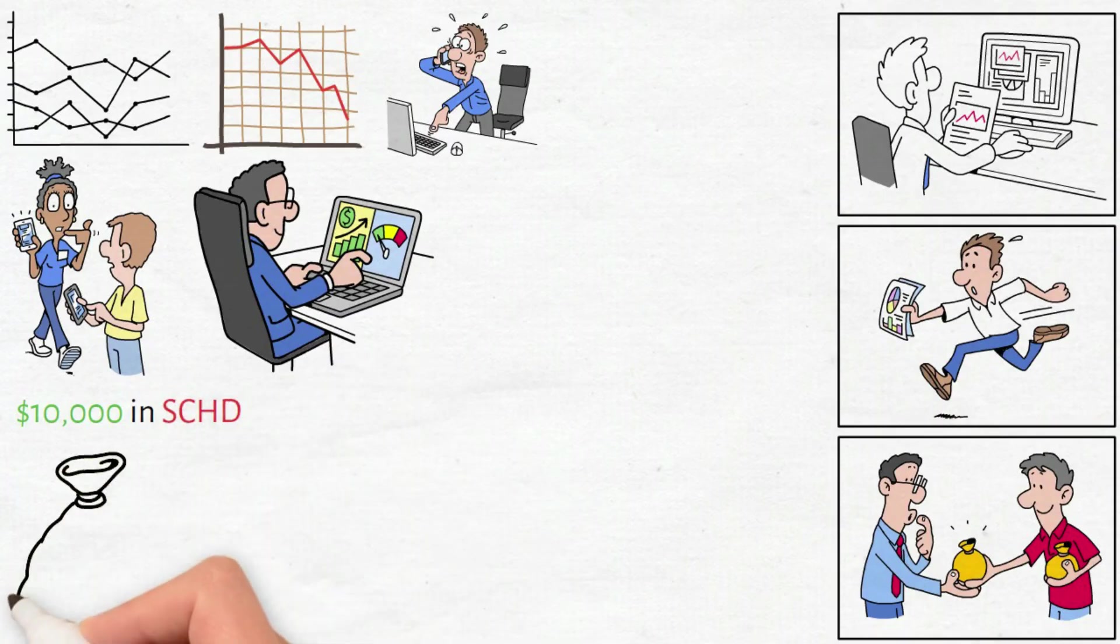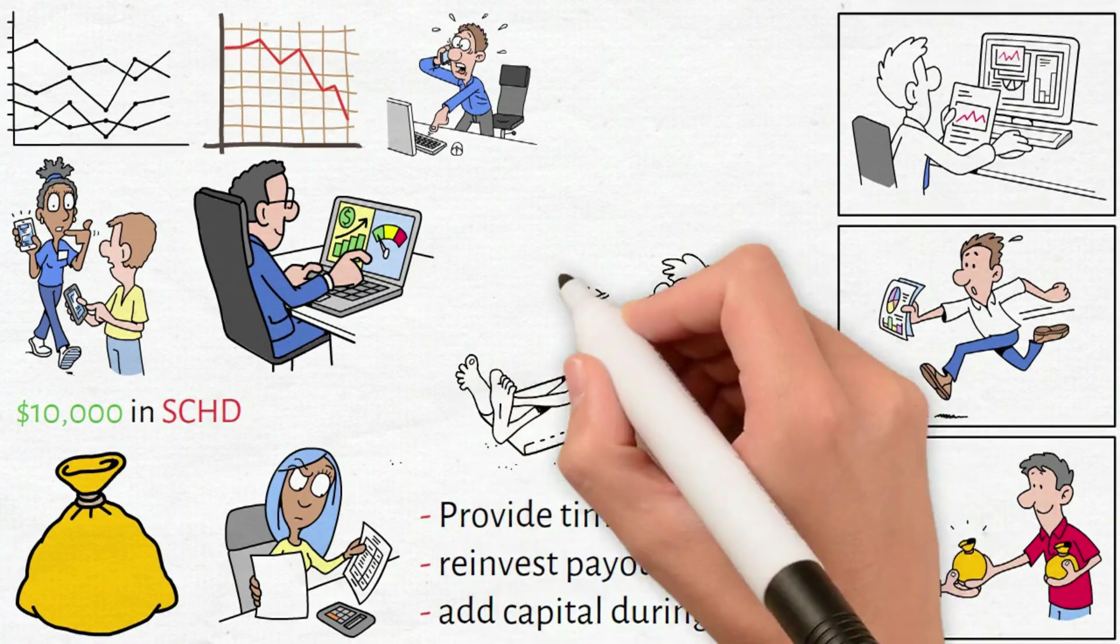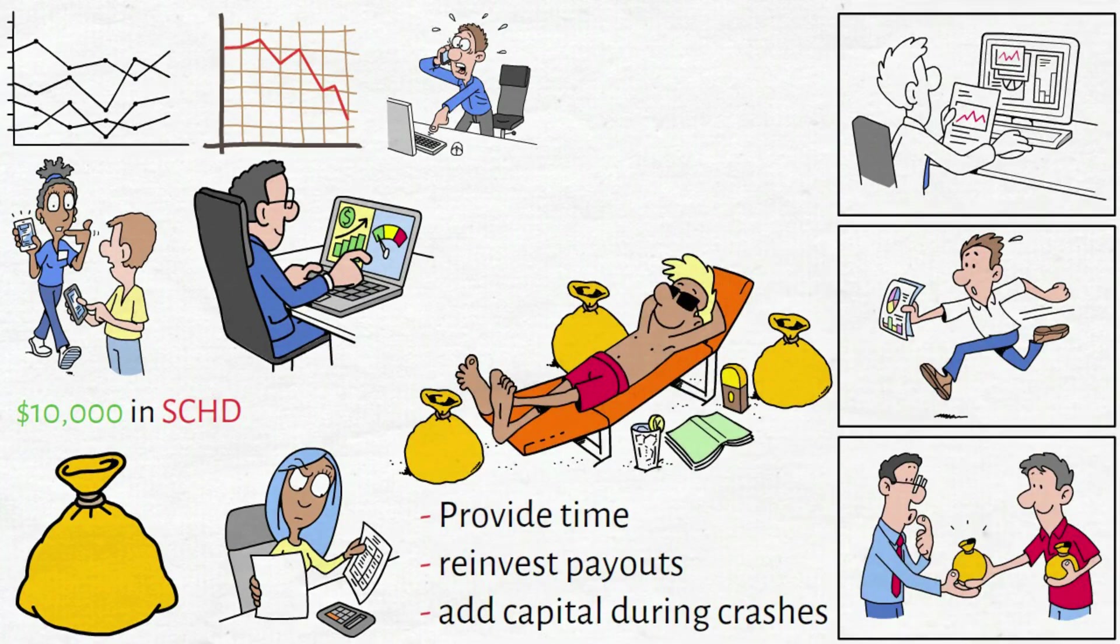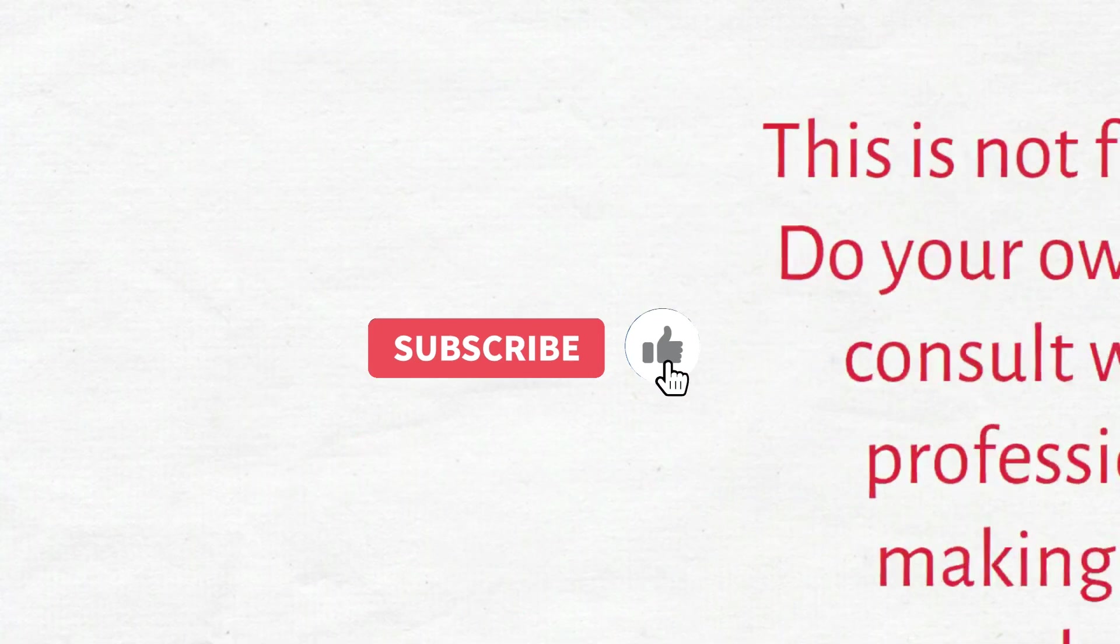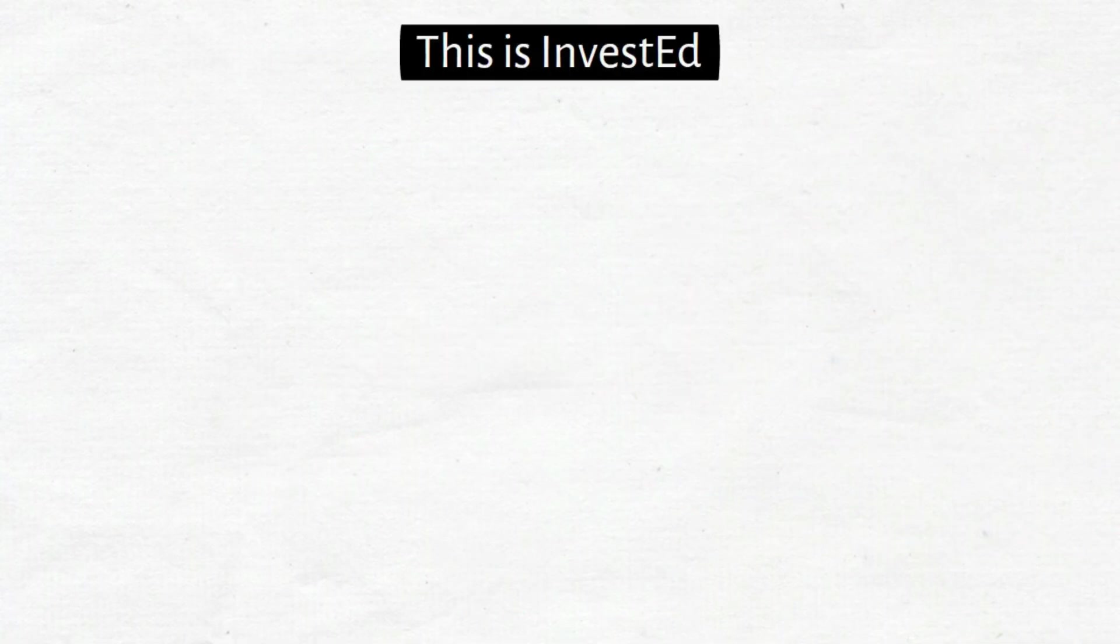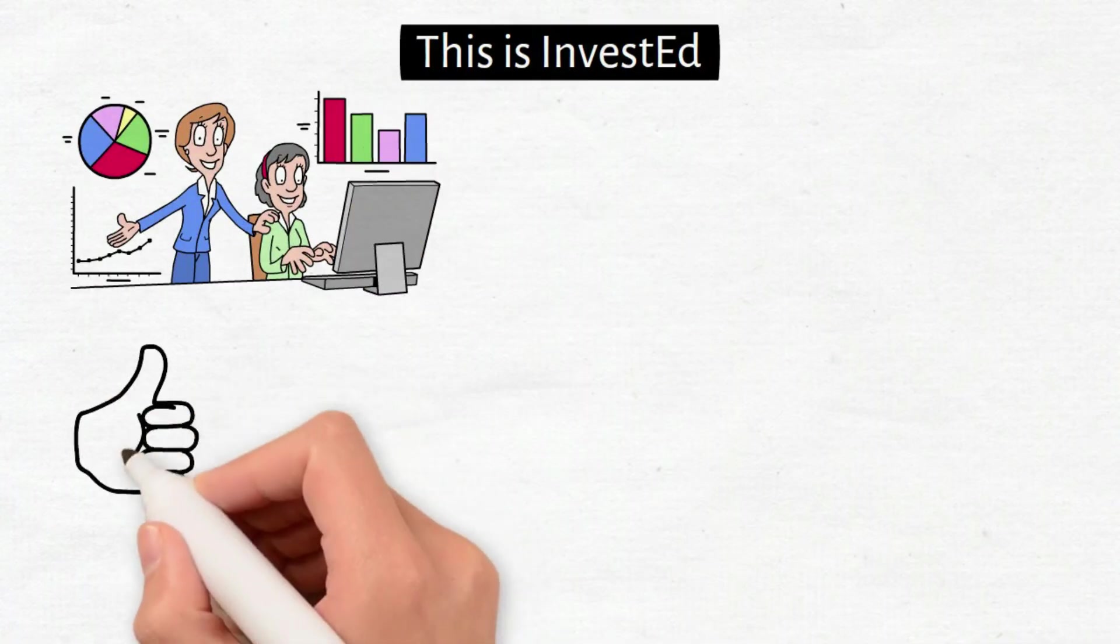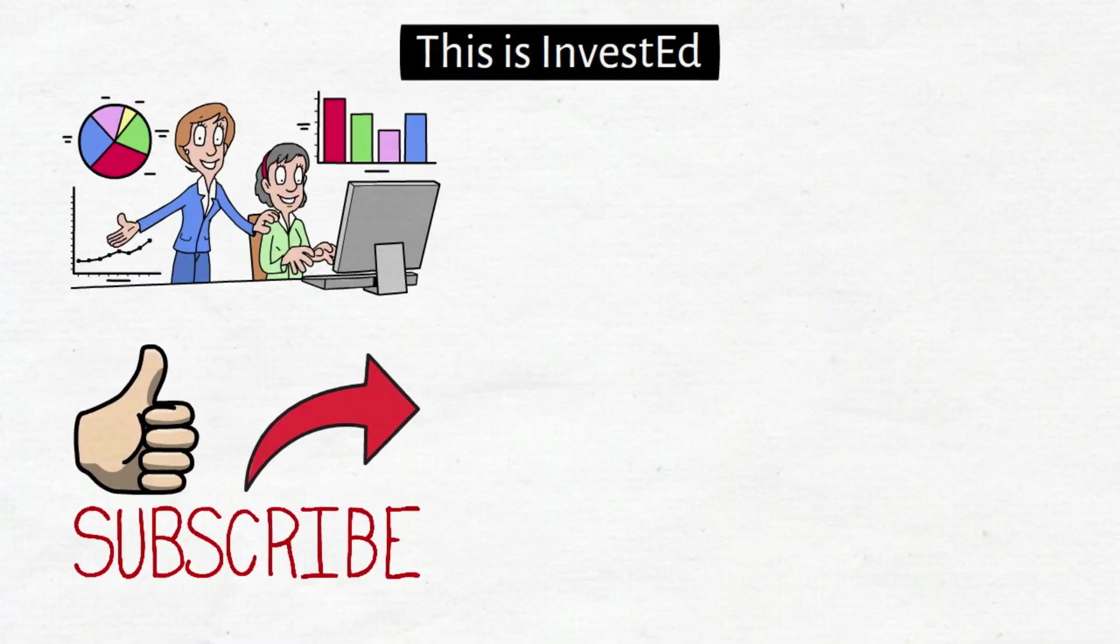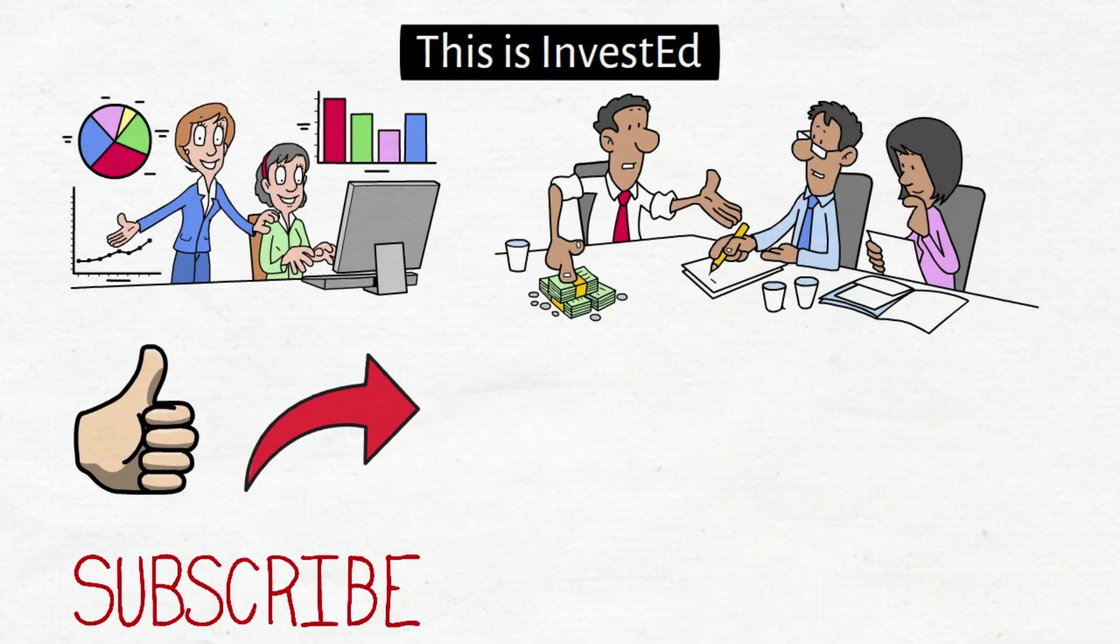$10,000 in SCHD isn't about overnight millions. It's about mathematical inevitability. Provide time, reinvest payouts, add capital during crashes, and watch compound growth deliver what it always delivers. Wealth. Your choice determines your outcome. This is not financial advice. Do your own research and consult with financial professionals before making investment decisions. This is InvestED. Welcome to wealth construction that survives when everything else collapses. Smash that like button, share with someone who needs this, and subscribe for real market insights. Here's to protecting your wealth and investing smart. Profitable investing.